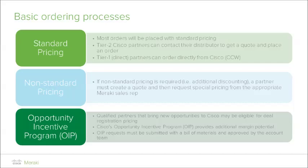The last level of pricing involves the Opportunity Incentive Program, or better known as OIP. It is a very popular and beneficial deal registration program that Cisco offers to the partner community, as it provides additional margin to the reseller. OIP requests must be created and accompanied by a bill of materials, and again approved by the Meraki account team. There are several other considerations and prerequisites that must be met for OIP.